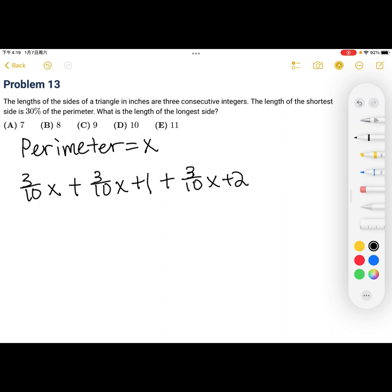And then, notice I put all these addition signs because if you add all these together, they would equal the perimeter. And now we have an equation where we can solve for x.